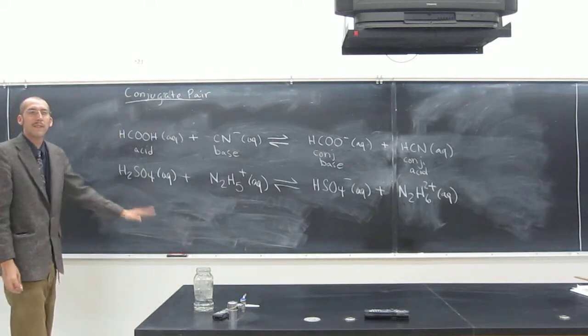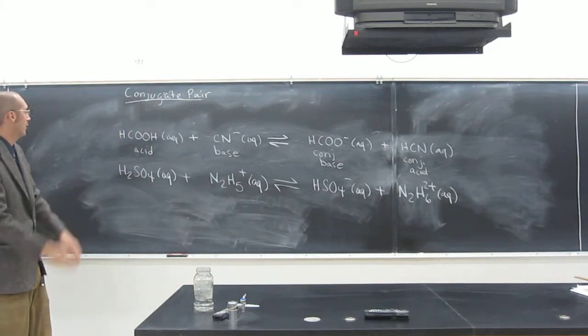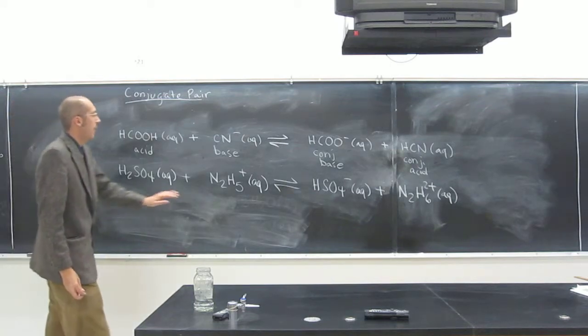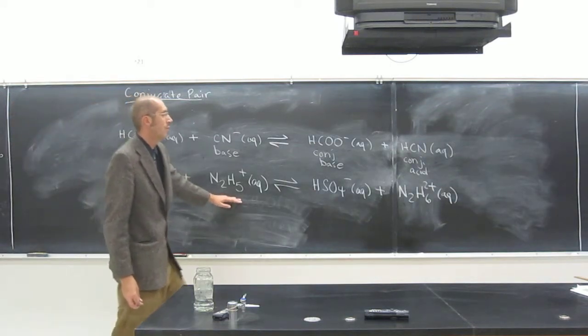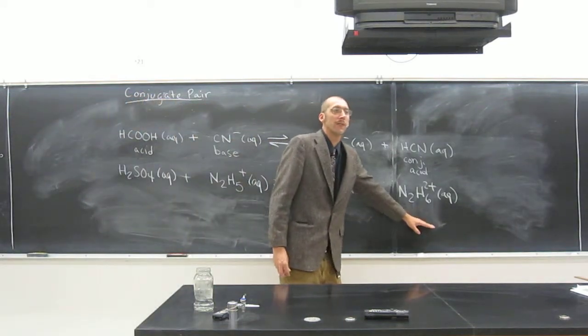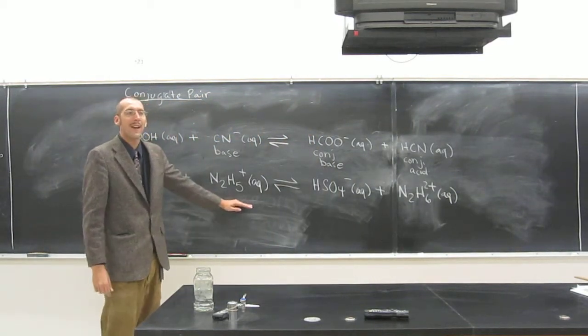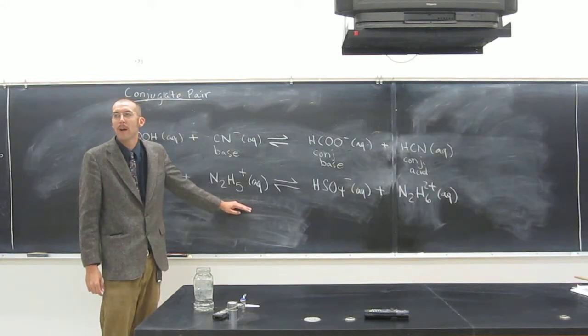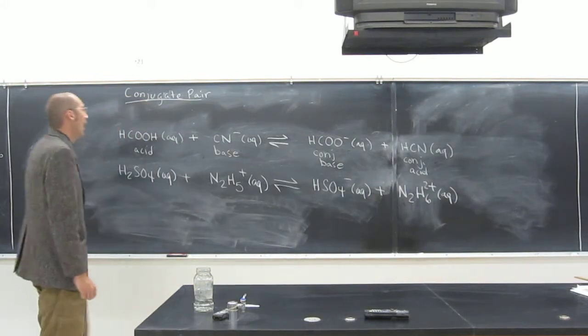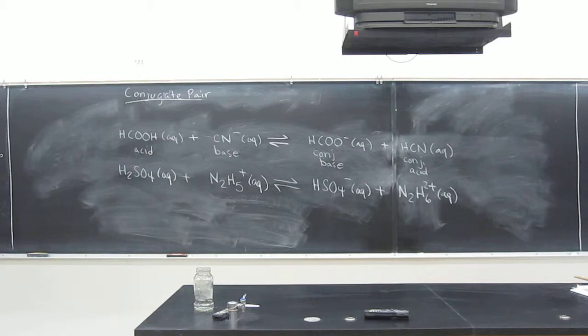The bottom one gives a different example, a kind of weird example, where the positive thing actually becomes more positive. So at first glance you might think, well, this is going to be the acid because it doesn't want to have that positive charge. That's a good thing to think about first, but you've got to look at the whole thing.